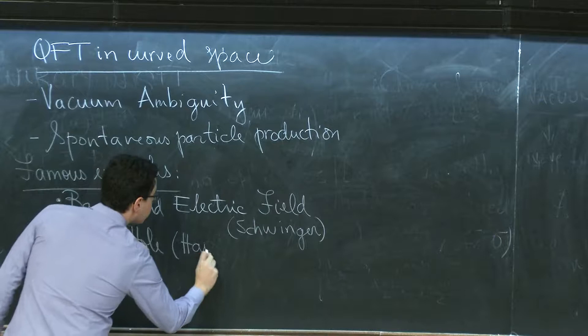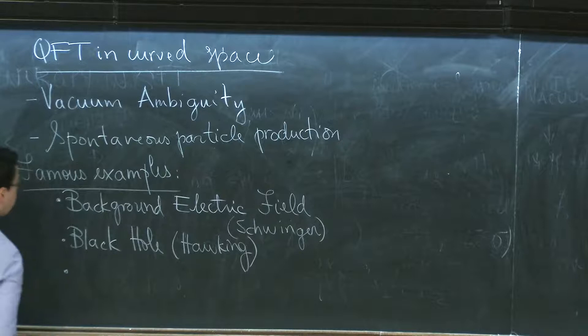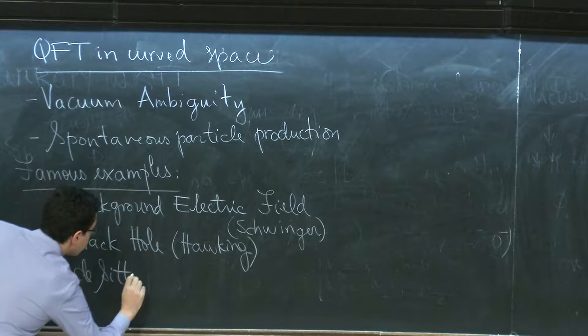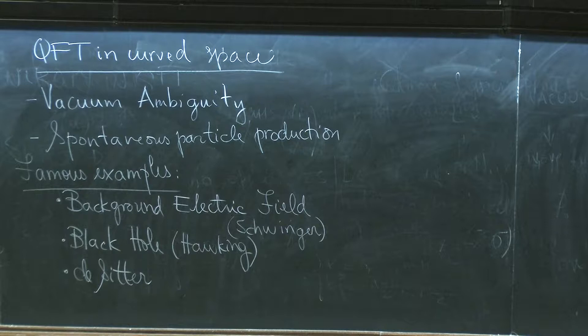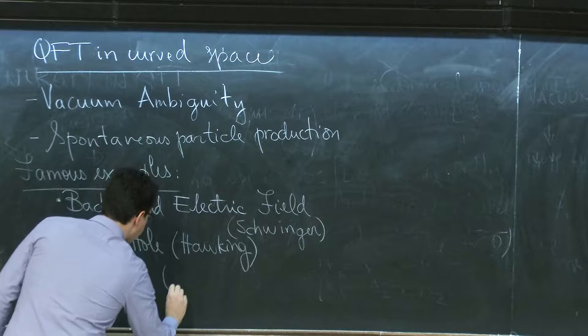Another famous example is that of black holes, usually associated with the name of Stephen Hawking. But the one I'll describe — and I would say the one that is closest to reality, if we believe in this paradigm and can actually probe particle production — is that of de Sitter space. A lot of authors have contributed to the theory of de Sitter space, and I'll mention them along the way.